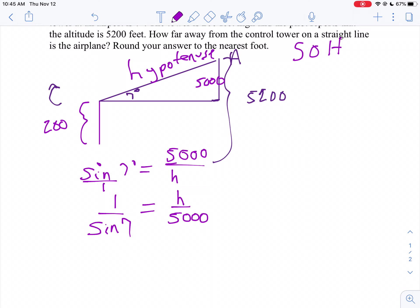So what am I going to do to solve for h? I'm going to multiply both sides by 5,000. So the exact answer for h is going to be 5,000 divided by the sine of 7 degrees. But we don't want the exact answer. We want the approximate answer because that doesn't make a lot of sense. Nobody knows what that is. I want to round my answer to the nearest foot.